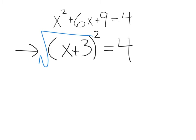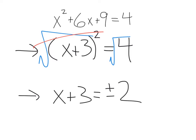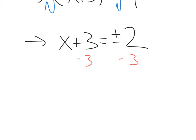Then we can take the square root of each side. That's going to leave us with x plus 3 equals plus or minus 2. Solving that out, we subtract 3 from each side, and we get x equals negative 3 plus or minus 2.